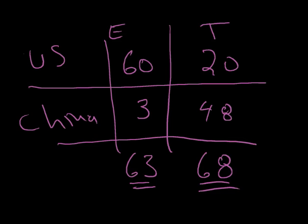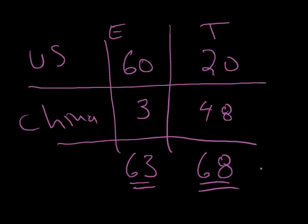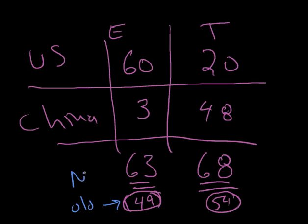Now pay very good attention to those numbers. Before trade, these countries were making 49 and 54 together and now after they specialized 63 and 68. You can see the difference. This is a big moment. 49 and 54 is the old world production. Here's the new world production. This is bigger and this is small. That's the point.